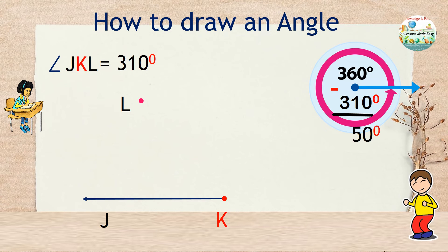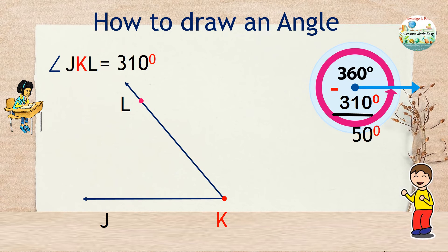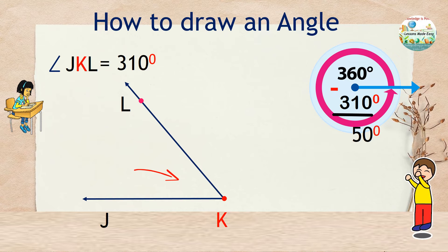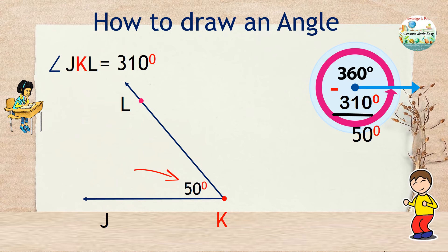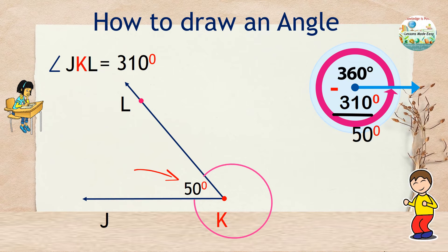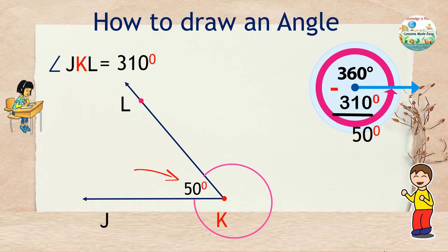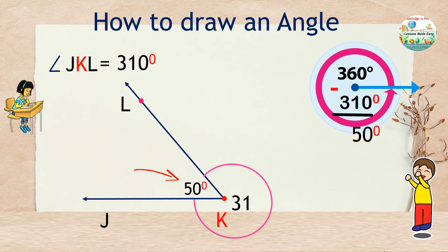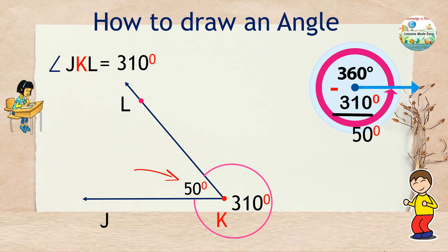Then draw a ray connecting the vertex to point L. But this angle is only 50 degrees. So this is not the angle that we need. But there's nothing to worry because all we need to do is to take the exterior angle or the angle on the other side and indicate the size of this outer angle as 310 degrees. And we're done. As easy as that. So you see, there's no need to work hard. Just work smart.